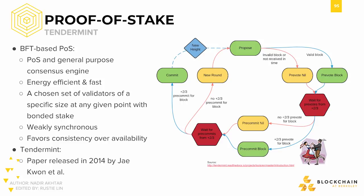In the beginning, Tendermint was an all-inclusive proof-of-stake system with its own native token to drive incentive, but since then it has evolved to become a more generalized middleware for replicating applications on many machines. This allows developers to write their own applications and business logic in any language. These applications talk to what's called the Application Blockchain Interface, which in turn talks to the Tendermint core consensus engine.